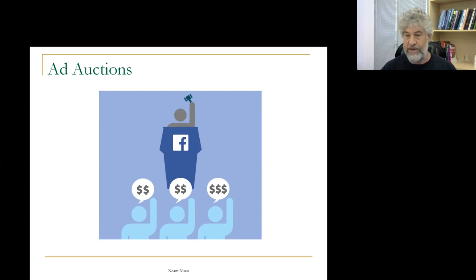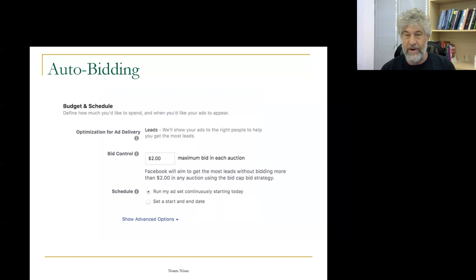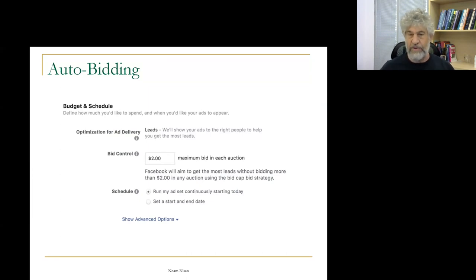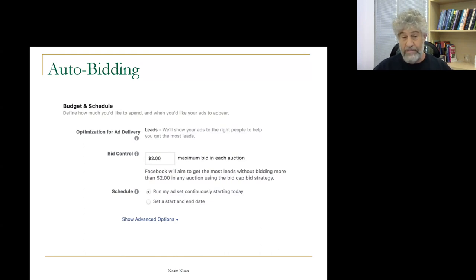It seems we understand these types of auctions and how to participate in them. But the truth is that because this is such a long list of auctions, practically no advertiser actually bids in an auction directly. Rather, they have some kind of software agent or auto-bidding agent, where each participant enters some key parameters into some kind of advertiser-facing interface, and then the software agent basically participates in a very long sequence of auctions on behalf of the advertiser, presumably optimizing for the advertiser.